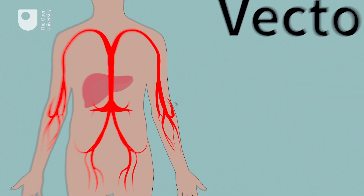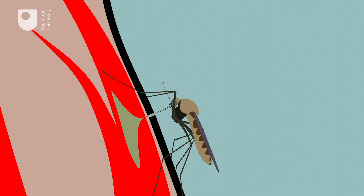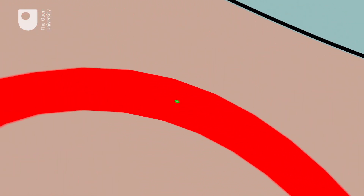When a mosquito bites, it releases a chemical into the circulation to stop the blood clotting. During this process, it could also release one or more of the malaria parasites it has been carrying into the circulatory system of the human it has bitten. If it does this, the person becomes infected.